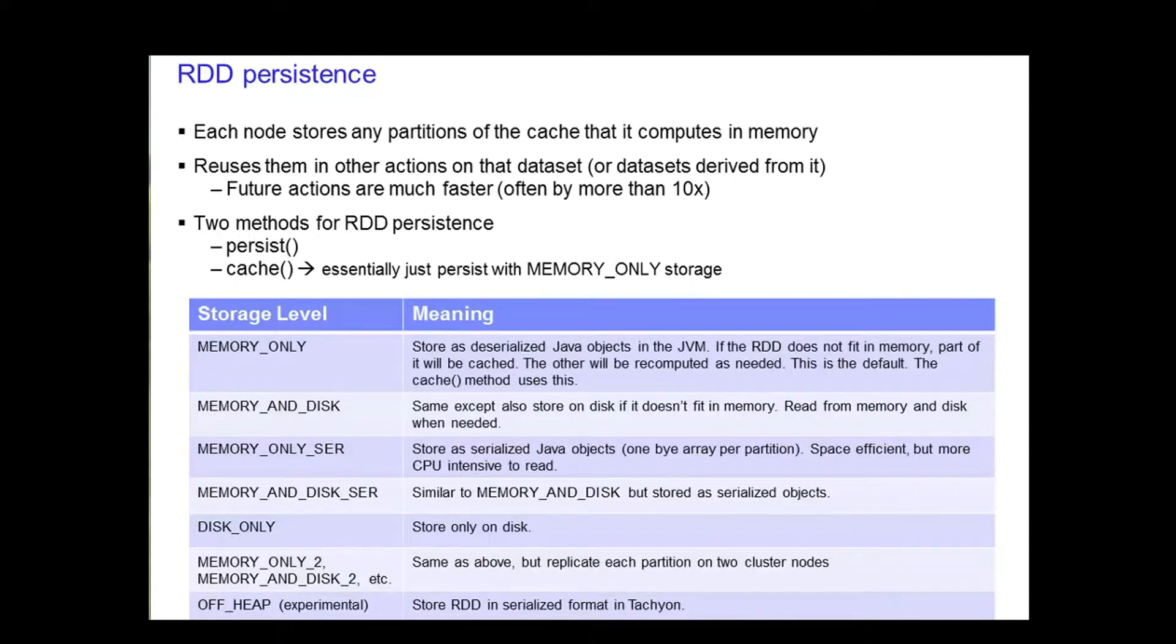When a subsequent action is called on the same dataset or a derived dataset, it uses it from memory instead of having to retrieve it again. Future actions in such cases are often 10 times faster.